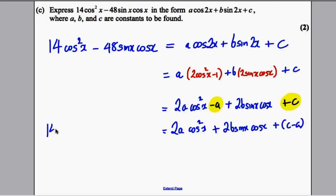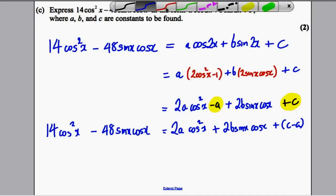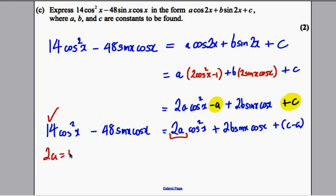Comparing coefficients: we've got cos squared, sinxcosx, and a number. What must A be? If 2A is how many cos squares we've got and we want 14, then 2A = 14, so A = 7. And here, -48 must equal 2B. Therefore, B = -24.